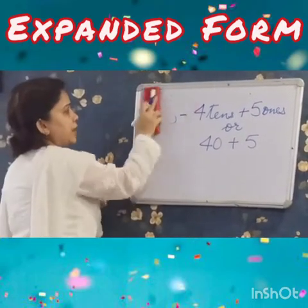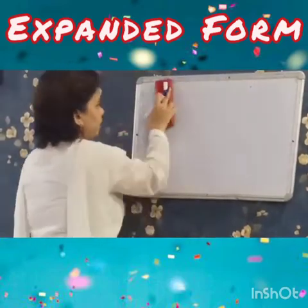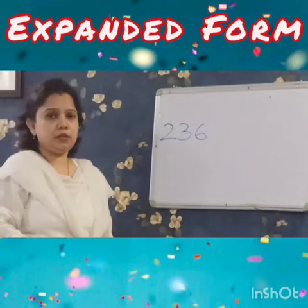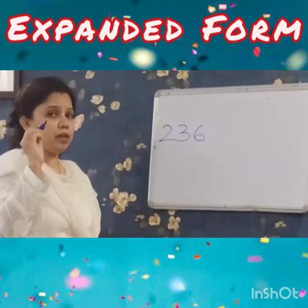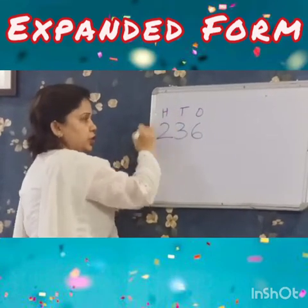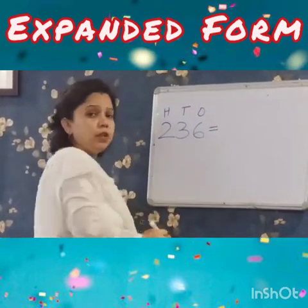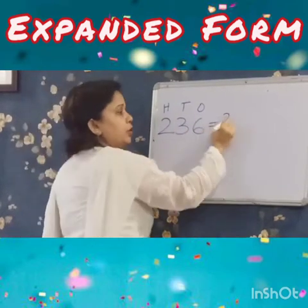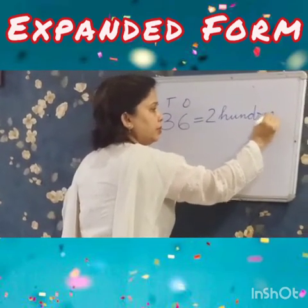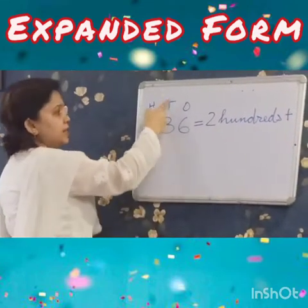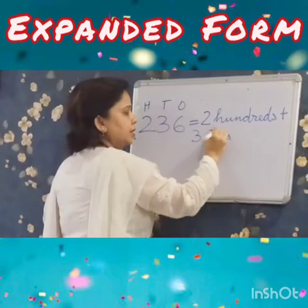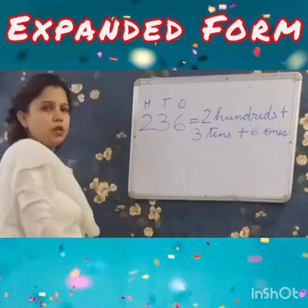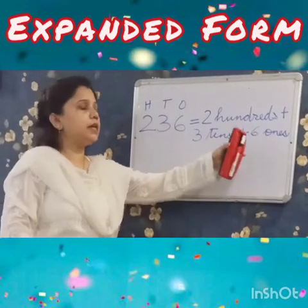Now look at another example. I have written here a 3 digit number, so you will write 3 places: O, T, H. To write in expanded form, we write the place value of each digit. 2 is in the place of 100's, so it is 2 100's. Plus, 3 is in the place of 10's, so 3 10's. Plus, 6 is in the place of 1's, so 6 1's. It is 2 100's plus 3 10's plus 6 1's.